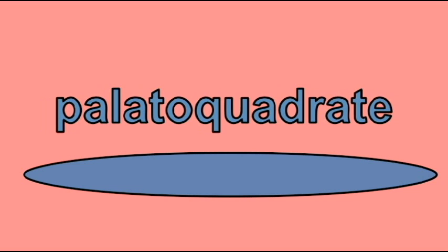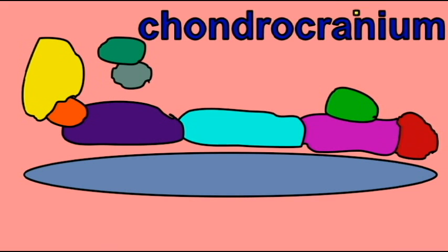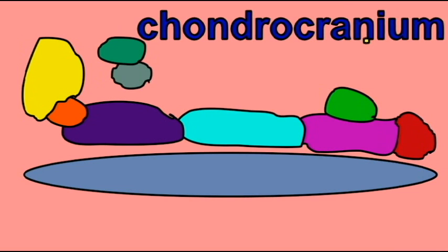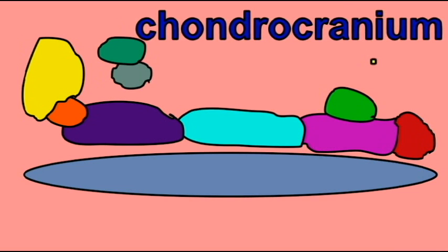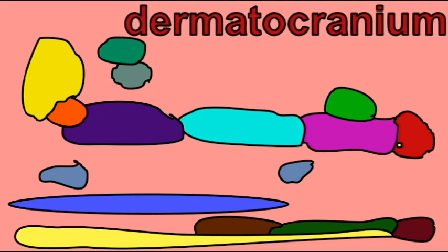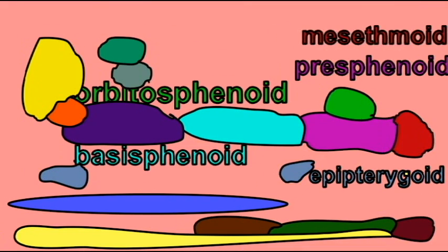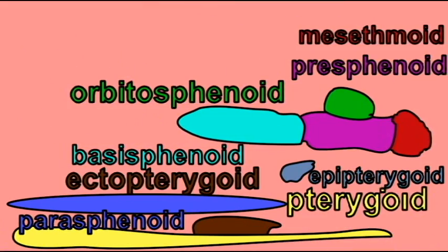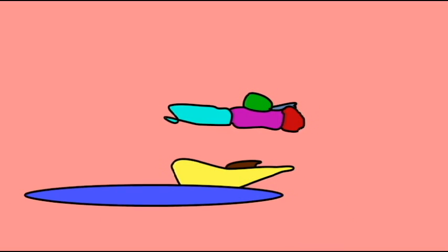Mammals and humans possess a single sphenoid bone. In reptiles and more primitive vertebrates, this sphenoid region is composed of multiple separate elements. What the fossil record indicates is that these separate elements gradually fuse together to form the single sphenoid bone found in mammals, including humans. Embryological development suggests the same. In mammalian embryos and human embryos, multiple separate units — those corresponding to these homologous structures in reptiles — fuse together to form the single human sphenoid bone.